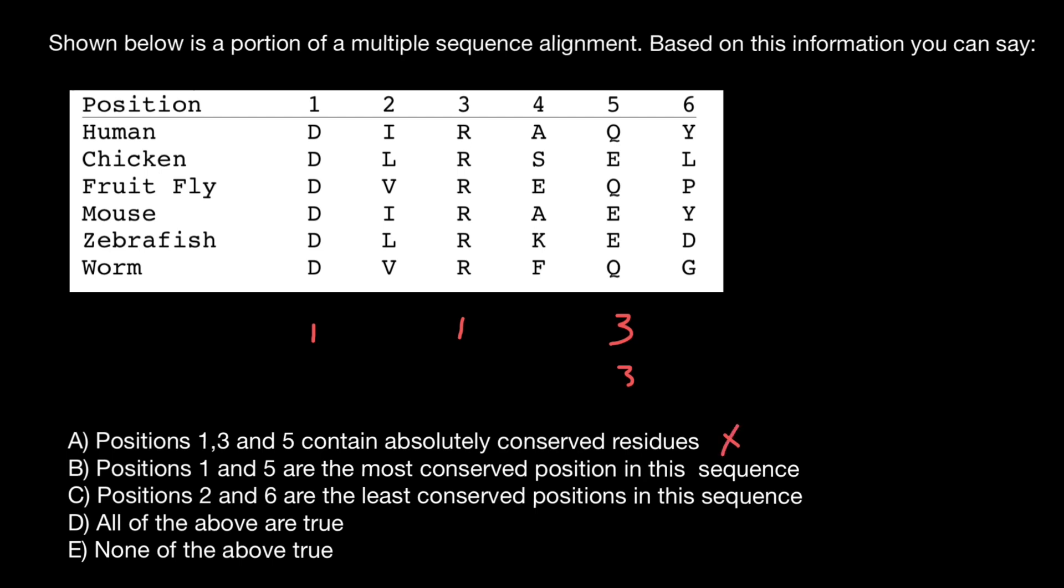Now let's check the second statement. Positions one and five are most conserved positions in this sequence. This is also a false statement because we know that number one and three are the most conserved positions in this sequence.